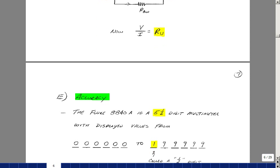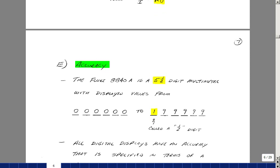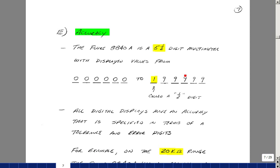Just like the resistor has a tolerance, the instrument itself has a tolerance also. Our meter is said to be a five and a half digit multimeter. What that means is that five of the digits can go from zero to nine, and one of the digits goes from zero to one, in the sense of being a half digit.